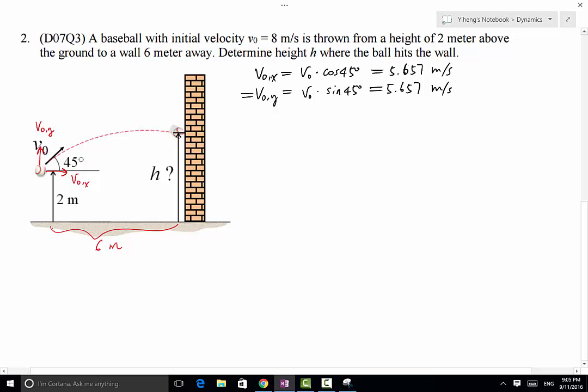So now let's analyze the motion along the horizontal direction. Along the horizontal direction, there is no other force, therefore there is no acceleration. So Ax is always 0. Therefore, we will always have the same velocity V0x along the horizontal direction.